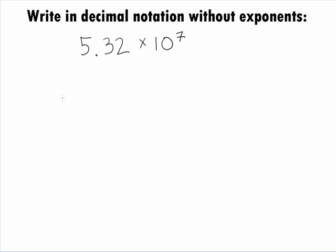In this example, we want to write the number 5.32 times 10 to the 7th power in decimal notation without exponents.